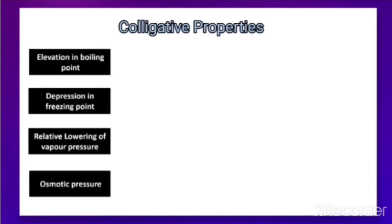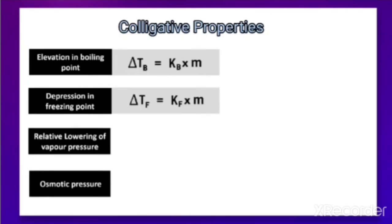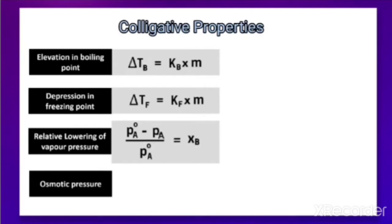We have discussed the formulas to find out the molar mass using these properties. The elevation of boiling point: ΔTb = Kb × m, where m is molality. Depression in freezing point: ΔTf = Kf × m. Relative lowering of vapor pressure: (P°a − Pa) / P°a = Xb, where Xb is the mole fraction of the solute. Osmotic pressure: π = CRT, where C is the concentration in terms of molality.